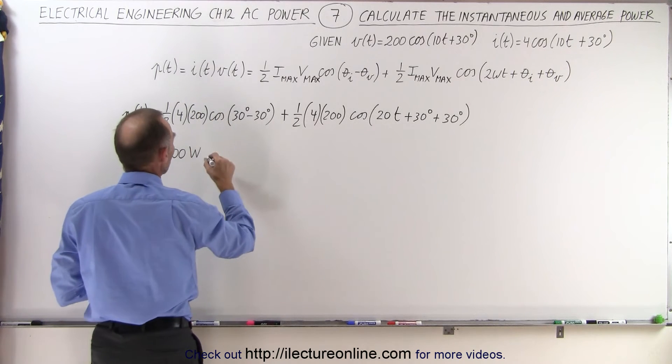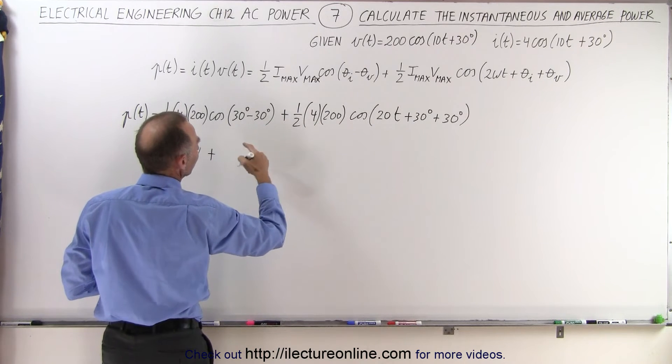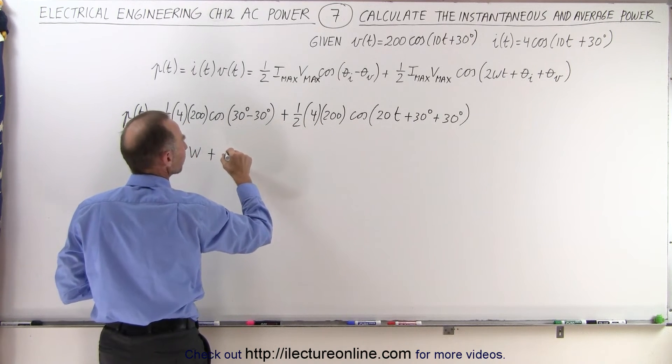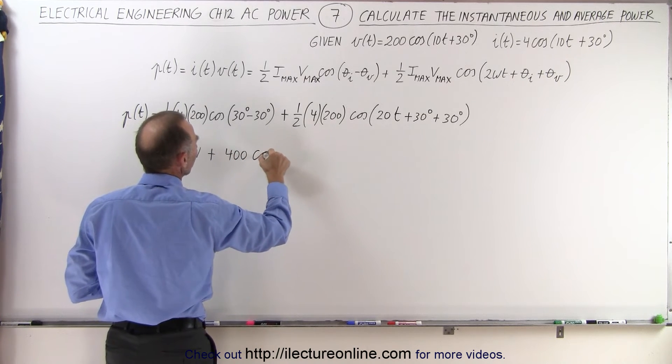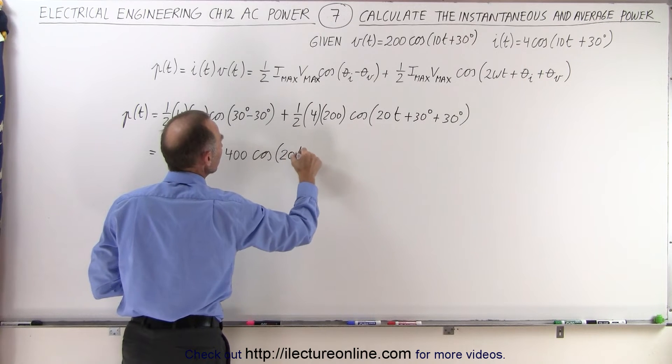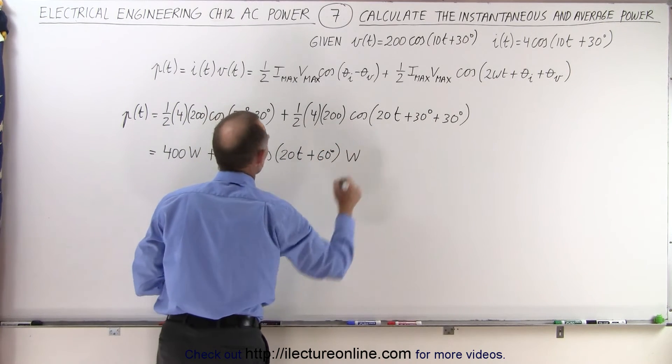And then we have this, that would be plus one half times 4 times 200, which is again 400, times the cosine of 20t plus 60 degrees, and that's also going to be in watts.